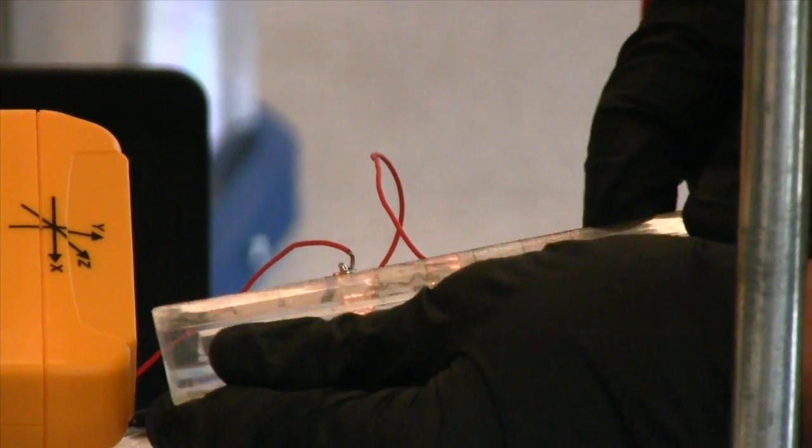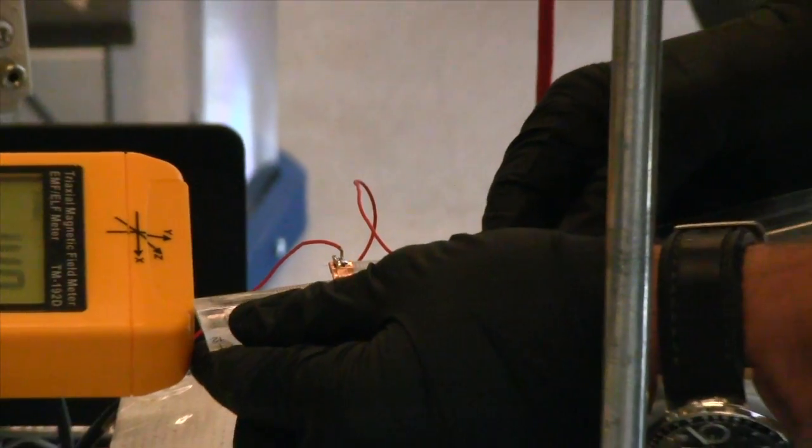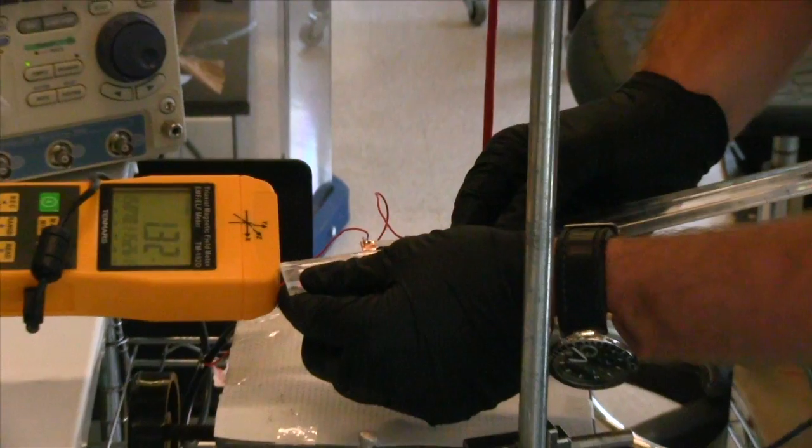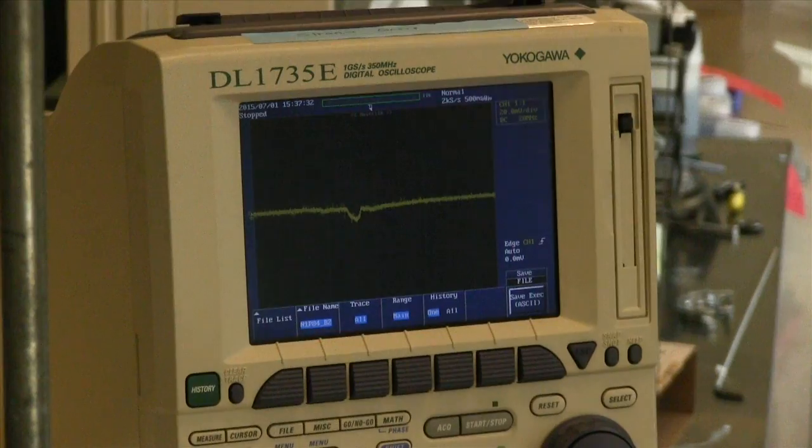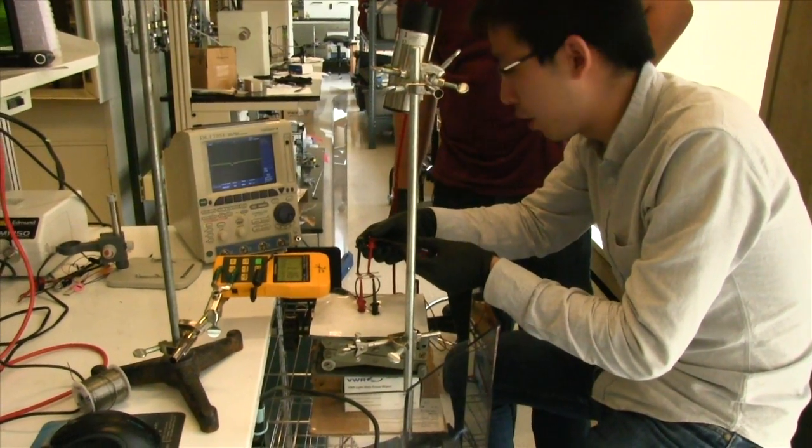Here we're measuring the strength of our magnetic field. Because the strength is dependent on how far away the meter is from the actual coil, it's important to know the distance. We're measuring the resistance across the sample, and this one is 0.9 ohms.